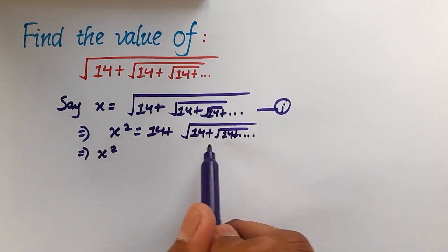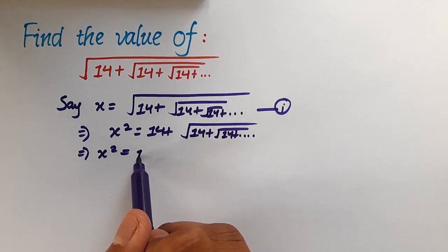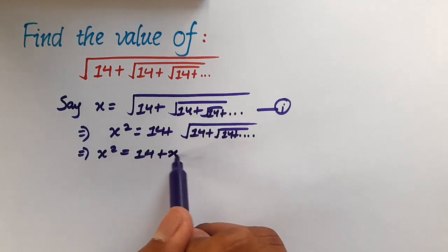This value here is nothing but x from equation 1, so let's replace it with x and write x square is equal to 14 plus x.